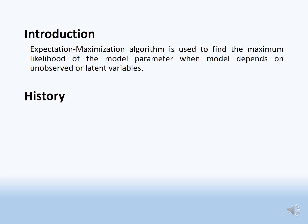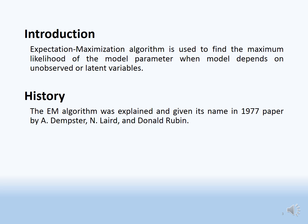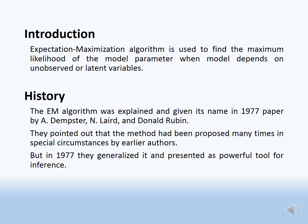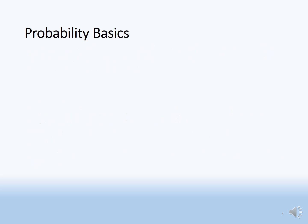History: the EM algorithm was explained in 1977 by Dempster, Laird, and Donald Rubin. They found that this method had been proposed many times by different authors in very special circumstances. In 1977, they generalized it and presented it as a very powerful tool for inference.